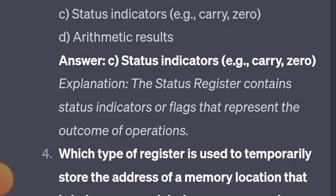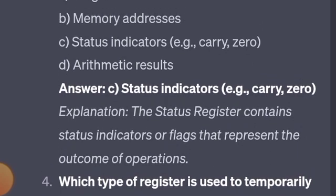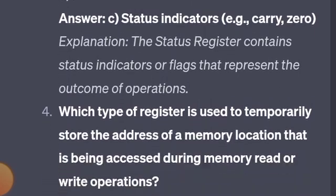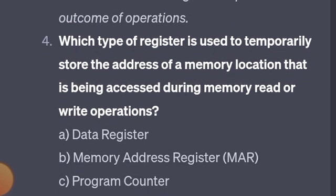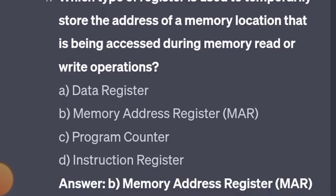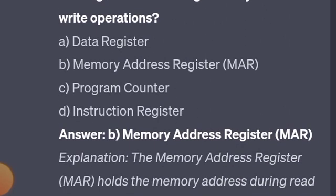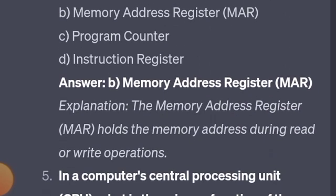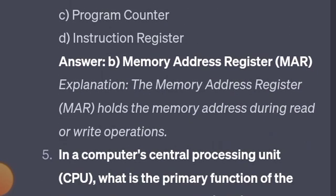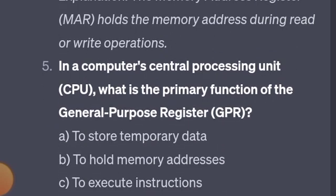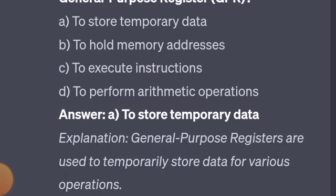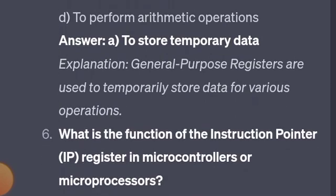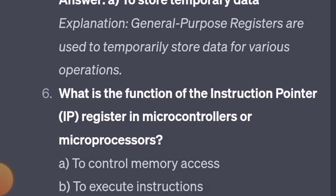We can use the status registers as well as the flag registers. Which type of register is used to temporarily store the address of a memory location that is being accessed during memory read or write operations? Memory address registers. Primary function of general purpose registers: to store temporary data.